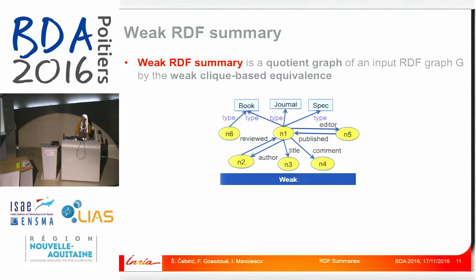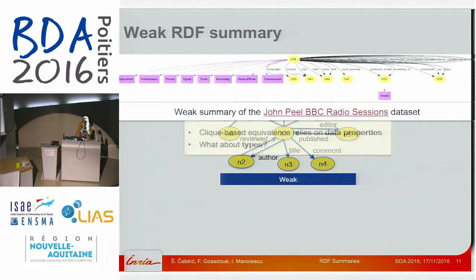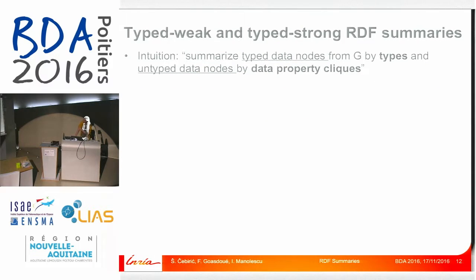We have the weak RDF summary based on the weak equivalence relation. What can happen in the weak summary is that many nodes from the input can end up being represented by the same summary node. For example, the top node 028 represents clearly very different things like performances, people, and music — so this is not very useful. Up to now, our clique-based equivalence only relied on data properties. We wondered whether we can use typing information to get a better, more accurate summary. This led us to type-to-weak and type-strong RDF summaries, where we first summarize typed data nodes by their typing, and then summarize the remaining untyped nodes by cliques based on data properties.